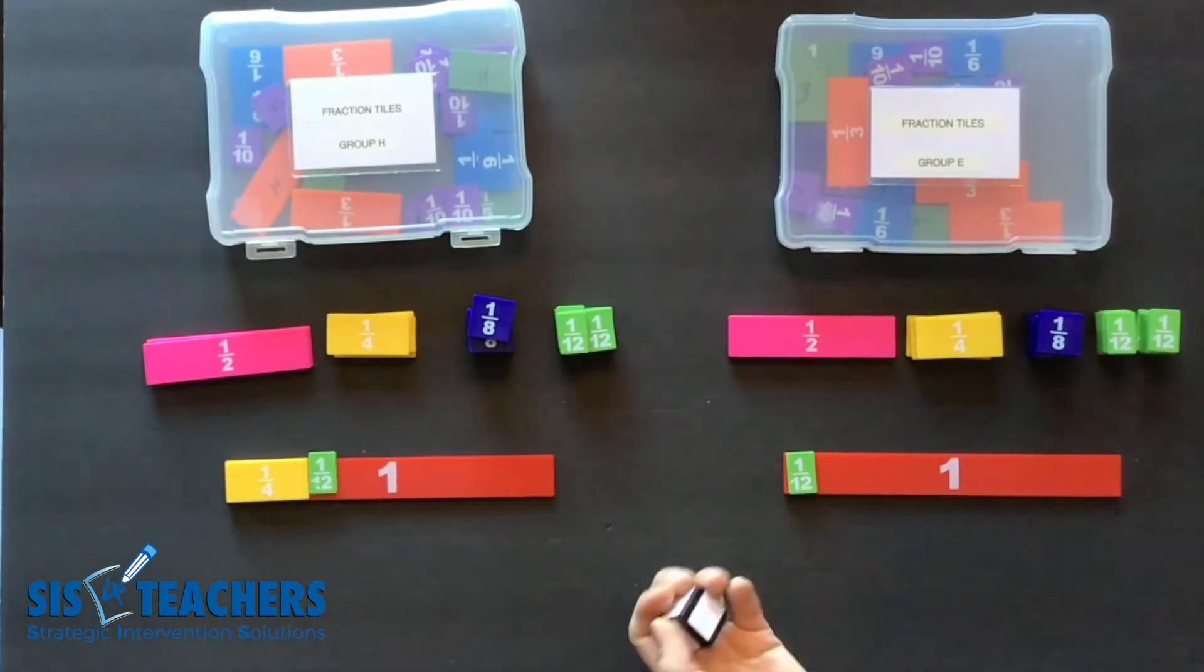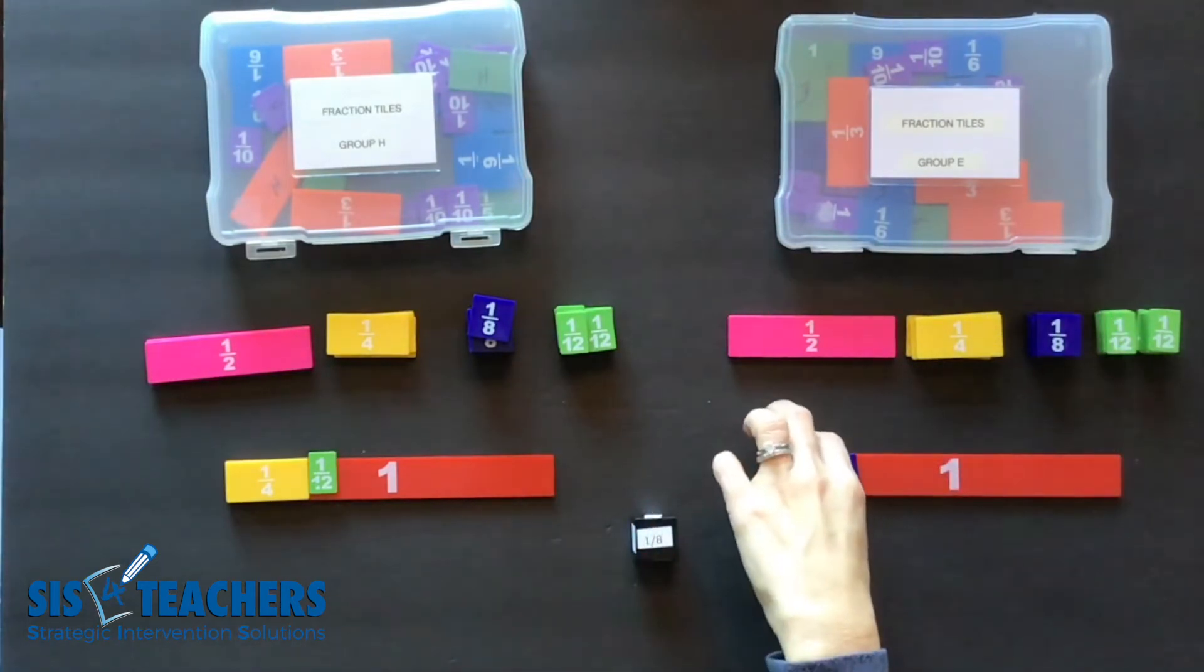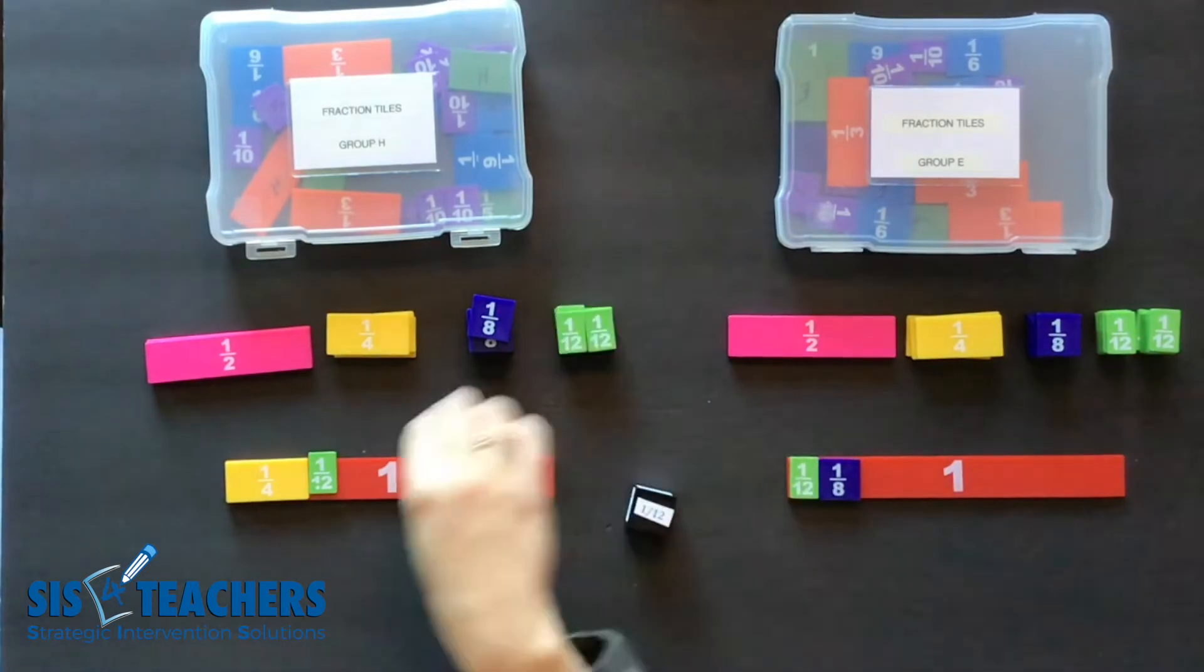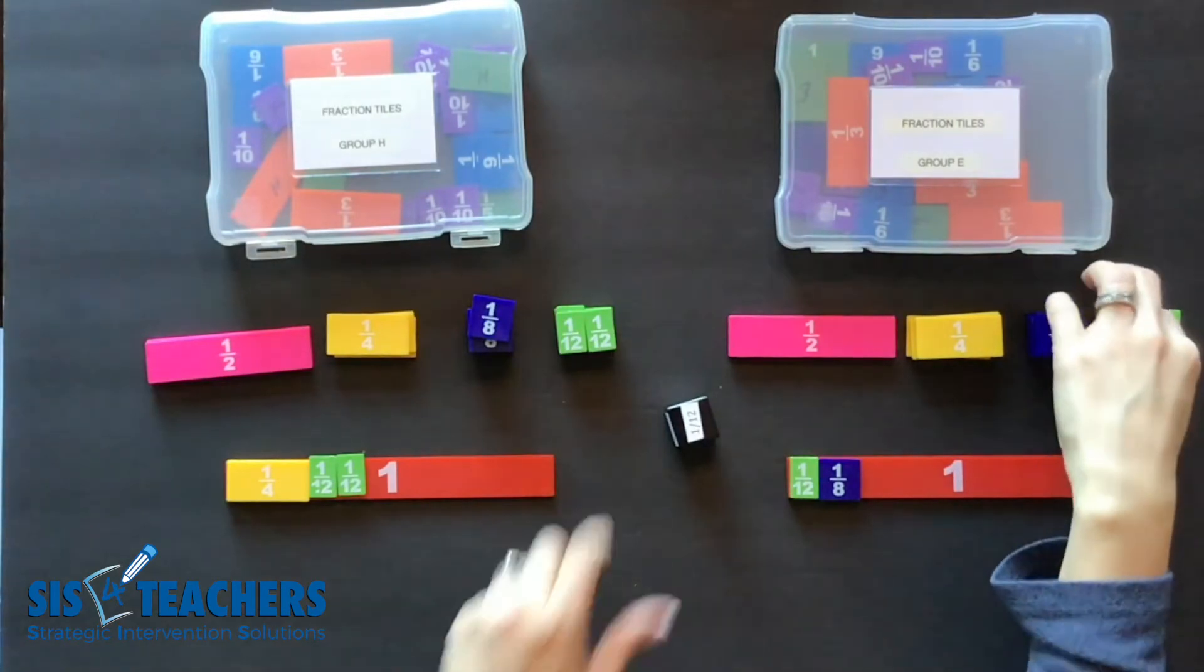Some kids you might be worried about might wait and just roll the twelfth, wait for a half and a half to go, but as they continue they'll be adding pieces on. My hope is that I get my fraction piece covered before my partner.